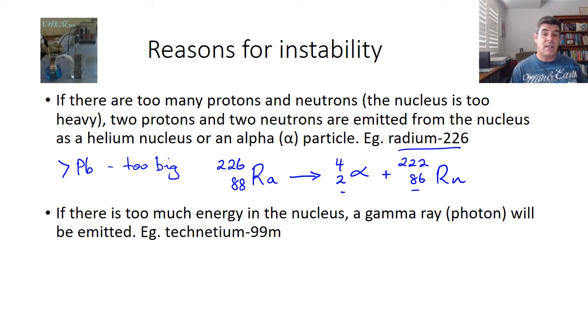The final reason is that there may be too much energy in the nucleus. And in terms of balancing our equations, this is probably the easiest one. Technetium-99 is an example, an important medical isotope. And the gamma radiation that's released has neither mass nor charge. So we'll end up with exactly the same thing at the end. We just have a little less energy in the nucleus.